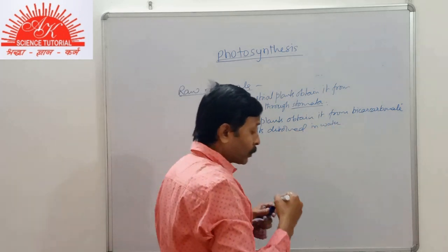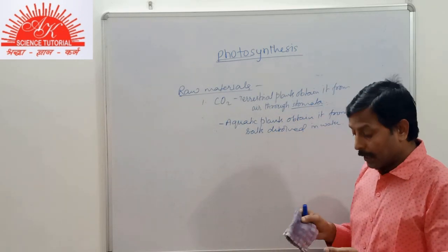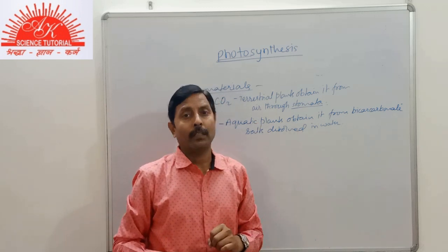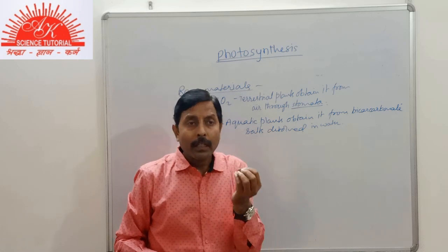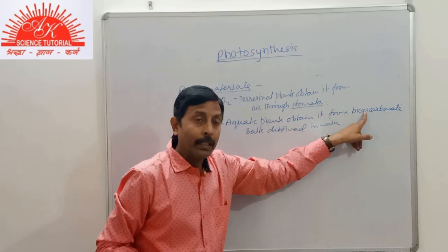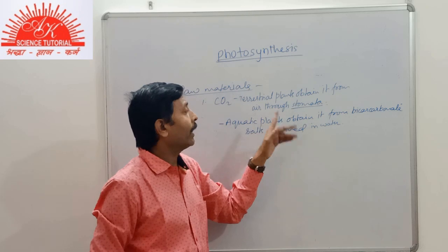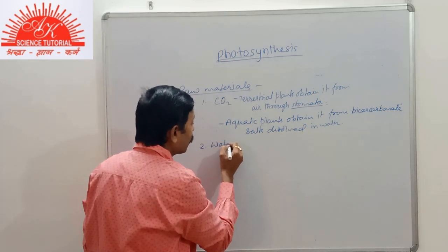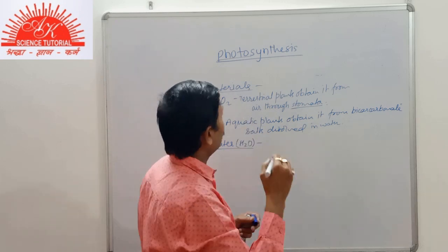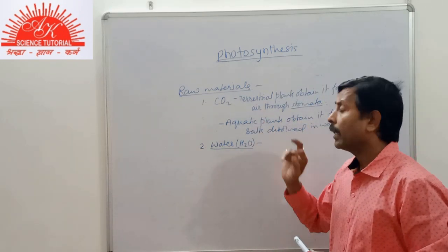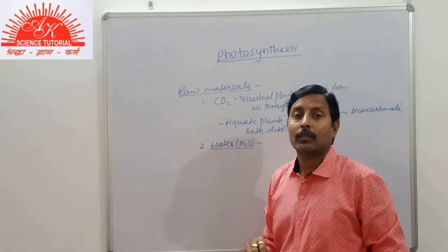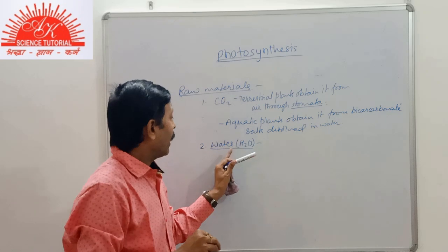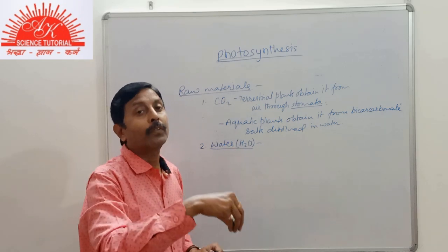CO2 is sparingly soluble in water, so in a water body CO2 is not directly available to the plant. There are bicarbonate salts present in water, which decompose partly during the daytime when sunlight falls and heat is produced — the bicarbonate salts decompose and release CO2, which is absorbed by the aquatic plants. The second raw material is water, H2O. Whatever the type of plant — terrestrial or aquatic — all plants obtain water absorbed by the roots. Terrestrial plants directly absorb it from the soil, and in aquatic plants the roots suspended in water absorb it from their surroundings.